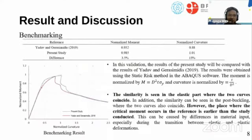Result and discussion - Benchmarking: In this validation, the result of the present study will be compared to the result of Yadav and Geramisis in 2019. The results were obtained using static Riks method in the Abaqus software. The moment is normalized by T squared times T times sigma Y, and the curvature was normalized by T over T squared. The similarity is seen in the elastic part where the two curves coincide. In addition, the similarity can be seen in the post-buckling where two curves also coincide.